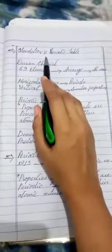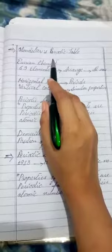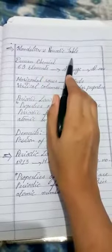Good morning students. Today we are going to start our new topic from the Book of Chemistry, Class 9, Chapter 3, Mendeleev's Periodic Table.